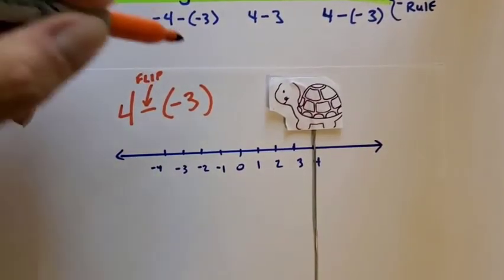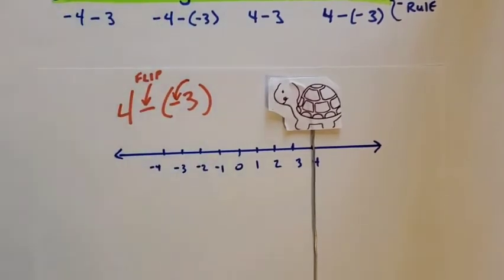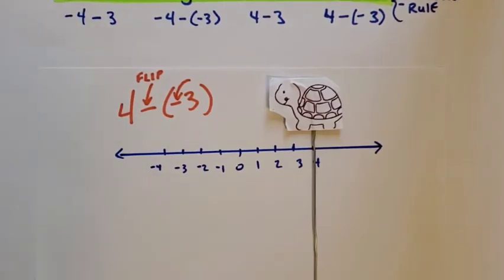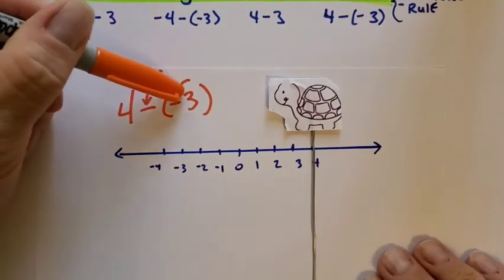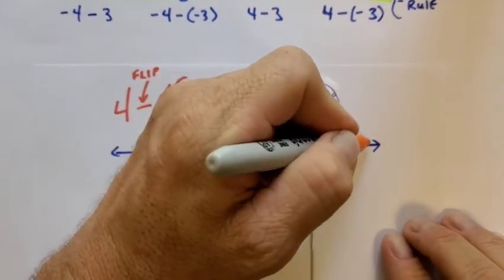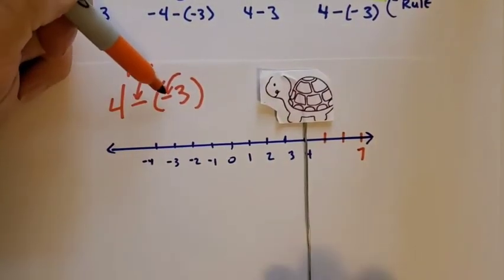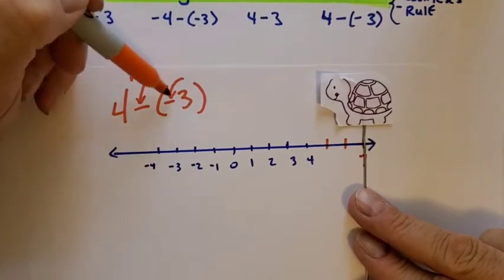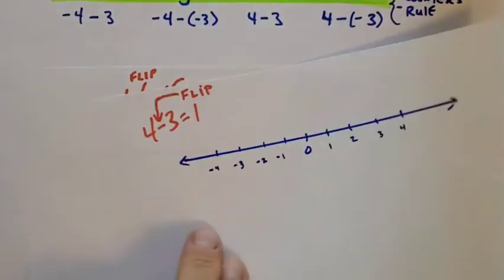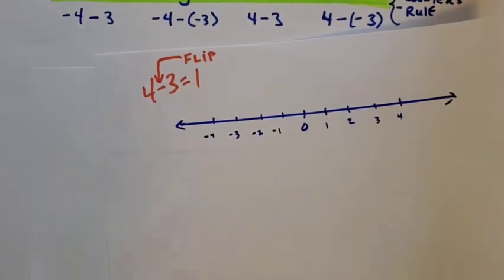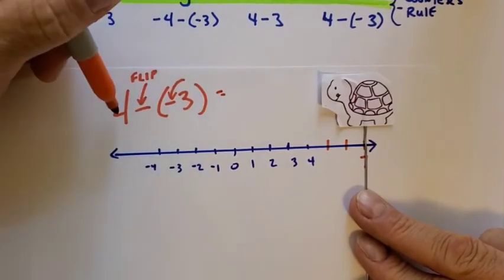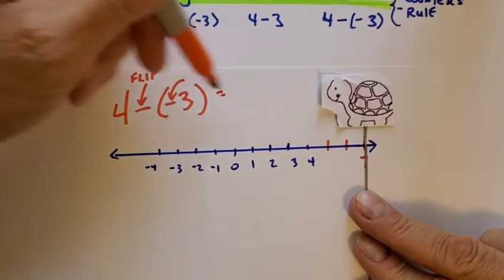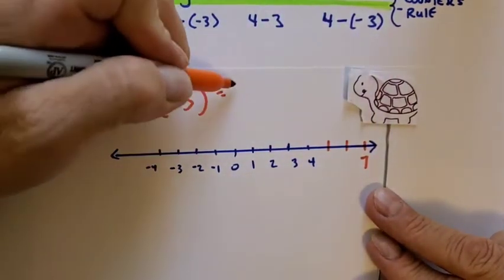Now look — in this case the 3 is negative. Negative is a backward direction, as you saw when doing same signs and different signs. So this is a negative 3, meaning Trini our turtle is going to back up 3: 1, 2, 3. Because he is going backwards. If it were positive, he'd be going forward like in the last example. So 4 minus negative 3 is 7.